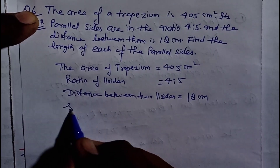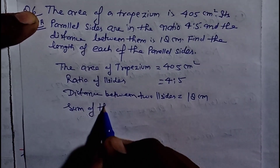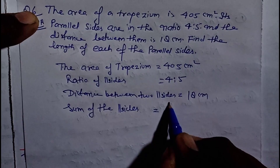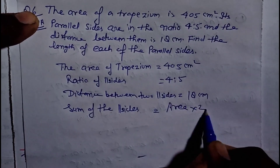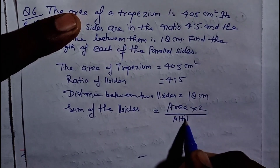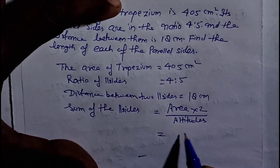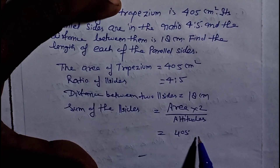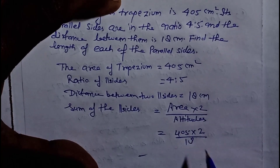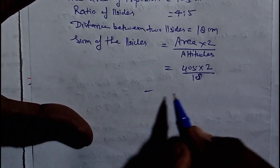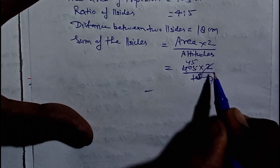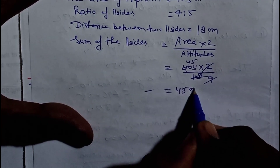Ab sabse pehle sum of the parallel sides find out karna hai. Parallel sides ka formula hoga: sum of parallel sides = area × 2 ÷ altitude. Yeh formula zarur yaad kar lena. Area kitna hai — 405 × 2 ÷ altitude 18. 405 × 2 = 810, 810 ÷ 18 = 45.